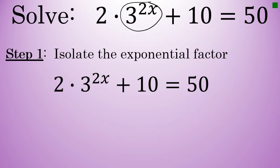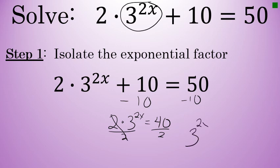This can be accomplished by first subtracting 10 from both sides of the equation, resulting in 2 times 3 to the 2x power equals 40, and then dividing both sides of the equation by 2, leaving us with 3 to the 2x power equals 20.